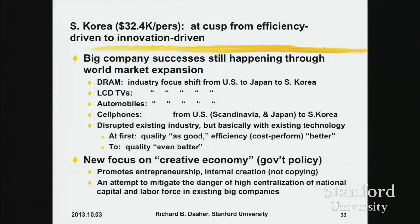South Korea is really at the cusp of leaving the efficiency-driven economy stage and getting into the innovation-driven economy stage. Most of the successes of the Korean economy in the last 20–30 years are really Korean companies taking over world markets from other companies like Japanese companies — in DRAM, the Korean companies definitely took market share away from Japanese companies. LCD TVs started in the US, then the Japanese took them, then Koreans took them from the Japanese. Automobiles is where it's at now — Hyundai and Kia market growth is dramatic. In cell phones, US Motorola and Nokia have lost ground to Samsung and LG.